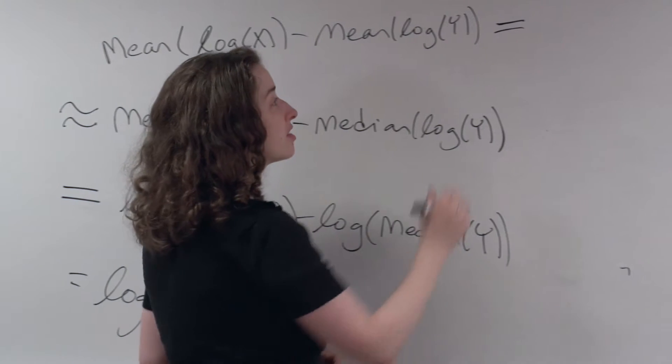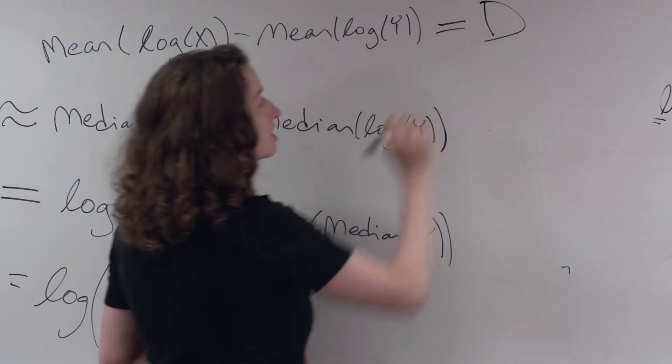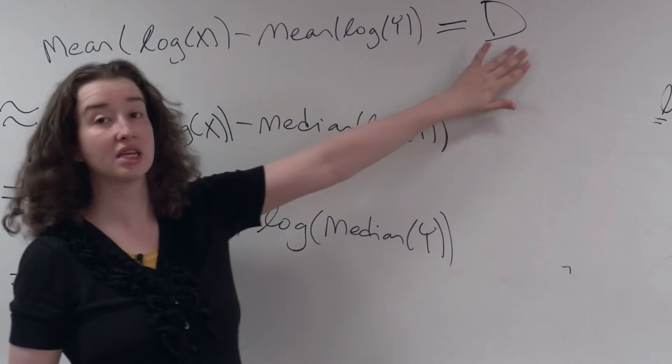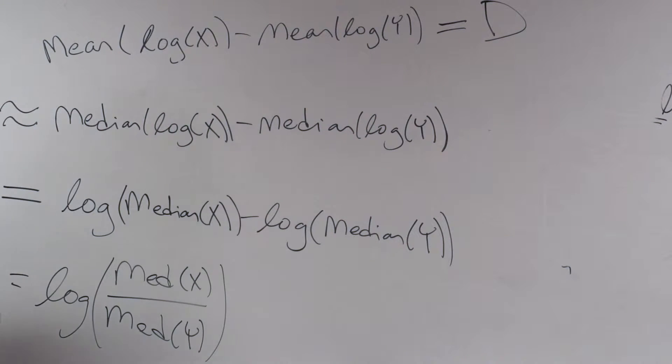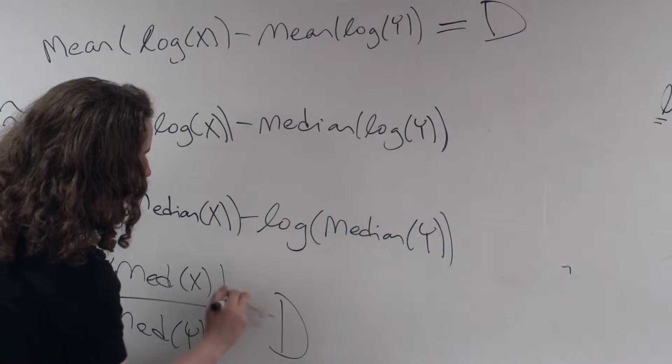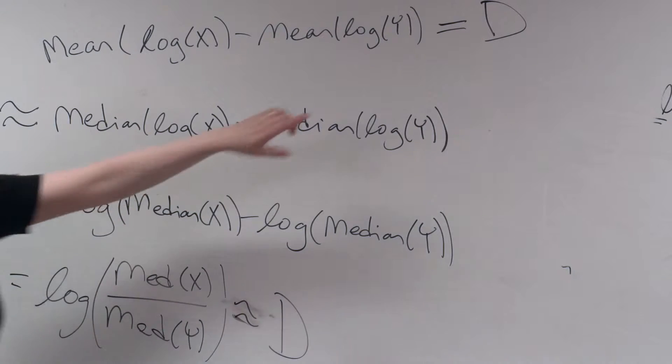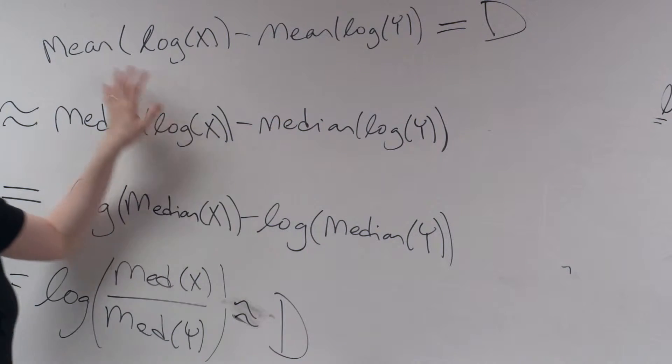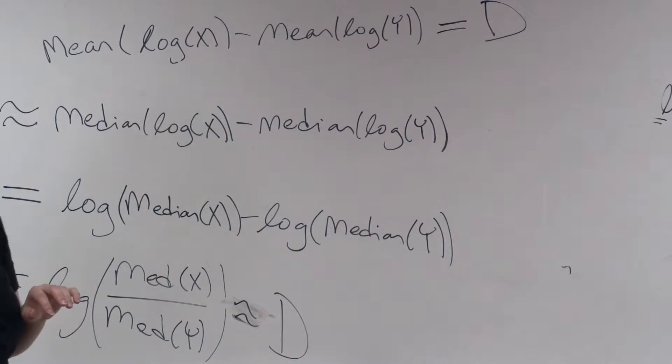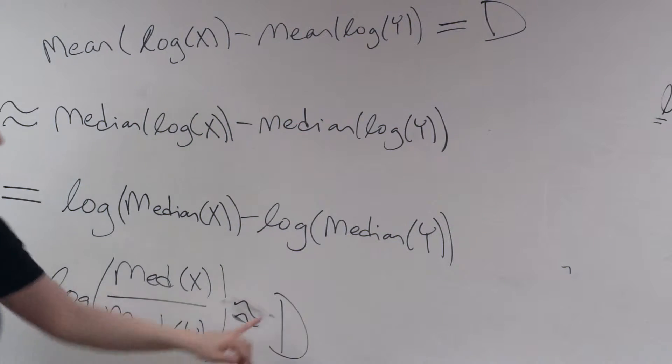And it could be any number. Let's call it d, just for lack of a different number. The capital D is that difference. So what we're saying down here is that this thing is approximately equal to d. Whatever I estimated as the mean of the log income in the Midwest minus the mean of the log income in the Northeast, whatever that number is, now I'm saying that number is approximately equal to the log of the median of x over the median of y.